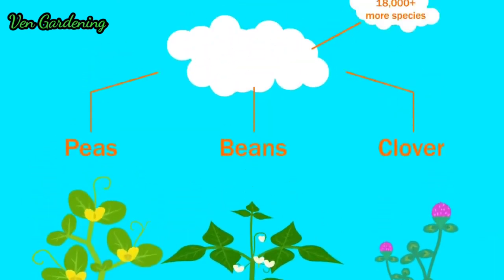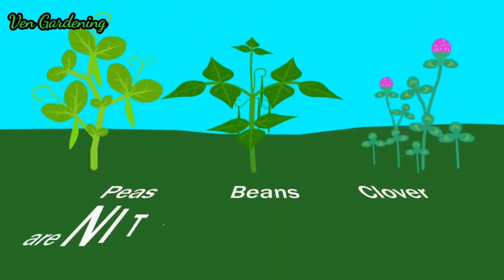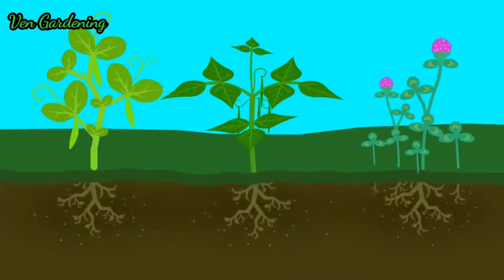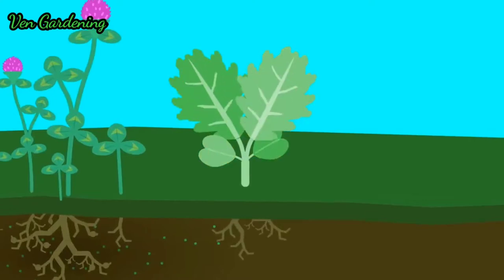Peas, beans, and clover are among the 18,000 species in the pea family. Most species in this family, including these three, are known as nitrogen fixers. They increase the level of nitrogen in the soil, which plants need to produce protein so they can grow, and chlorophyll so they can photosynthesize.